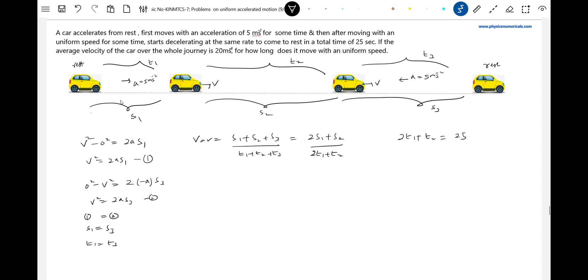I'll replace T2 with this. Total time of journey we know, there's no problem. What is V equals S2 into T2, so S2 equals V times T2. Further, T2 can be written as 25 minus 2T1. How long does it move with uniform speed - that's the only question asked.